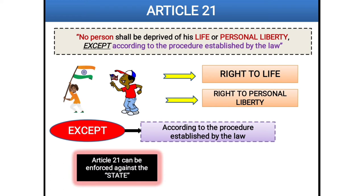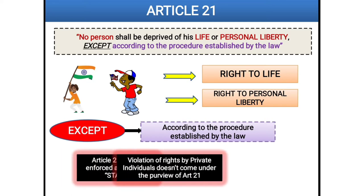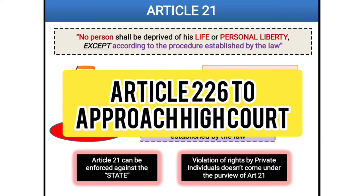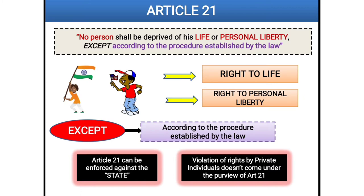Now, who comes under 'state'? We have already covered this in Article 12 — the link is in the description. If our fundamental right under Article 21 is violated by a private individual, it shall not fall under the purview of Article 21. The remedy in that case would be under Article 226 of the Indian Constitution to approach the High Court, and under any general law you can take action against that person.